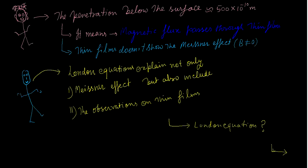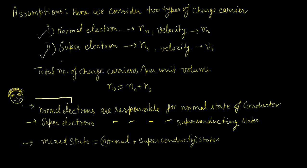Below the surface, the magnetic flux penetrates approximately 500 angstroms. As it enters the material, its intensity decreases gradually and becomes zero at a certain depth — that distance from the surface is called the penetration depth or penetration length. Since this distance is very small, we can treat it like a thin film, which does not violate the Meissner effect significantly.